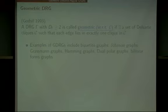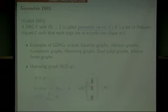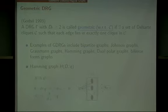Note that any bipartite graph is not a geometric distance regular graph. For example, let me explain the Hamming graph H(D,Q). In the Hamming graph, its valency is D times Q minus 1, and the smallest eigenvalue is minus D. The local structure of the Hamming graph is exactly the disjoint union of cliques of size Q minus 1. Hence, any maximum clique in the Hamming graph is a Delsarte clique, and any Hamming graph is a geometric distance regular graph.